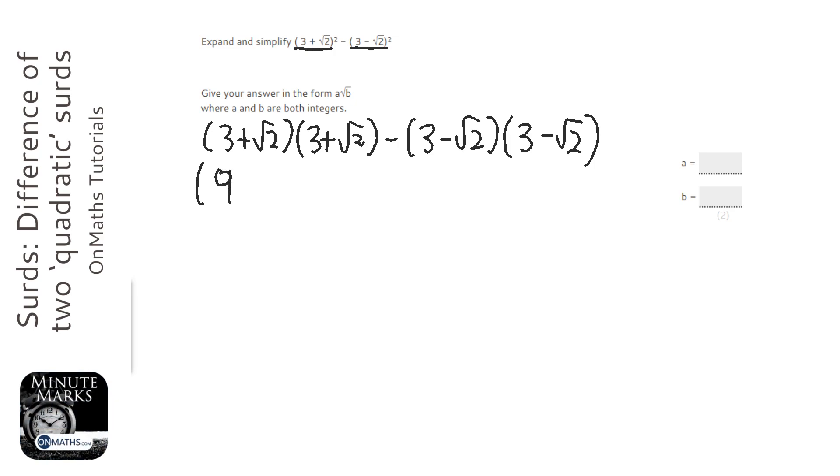So 3 times 3 is 9. Then we've got plus 3 root 2 plus 3 root 2, so plus 6 root 2. And then we've got root 2 times root 2, which is plus 2.